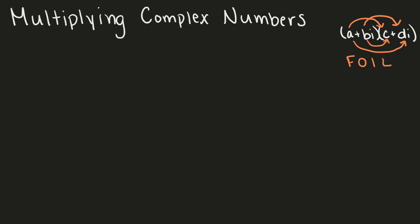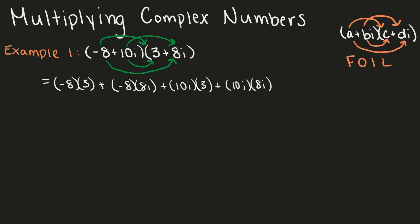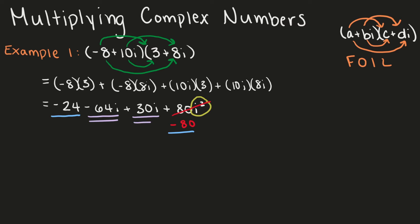Now let's look at a couple examples. First, we have negative 8 plus 10i times 3 plus 8i. We'll multiply first, outside, inside, and last. That gives us negative 8 times 3 plus negative 8 times 8i plus 10i times 3 plus 10i times 8i, which equals negative 24 minus 64i plus 30i plus 80i squared. Since i squared equals negative 1, 80i squared becomes negative 80. Negative 24 and negative 80 are like terms, and negative 64i and 30i are like terms. Combining these gives us a final answer of negative 104 minus 34i.